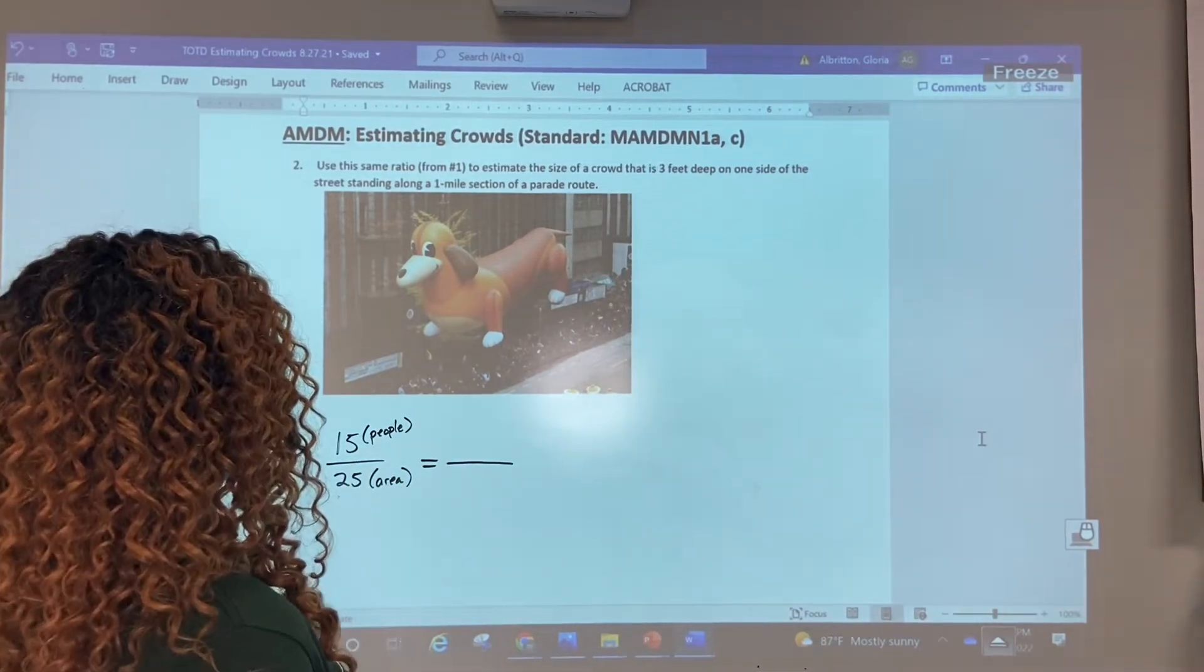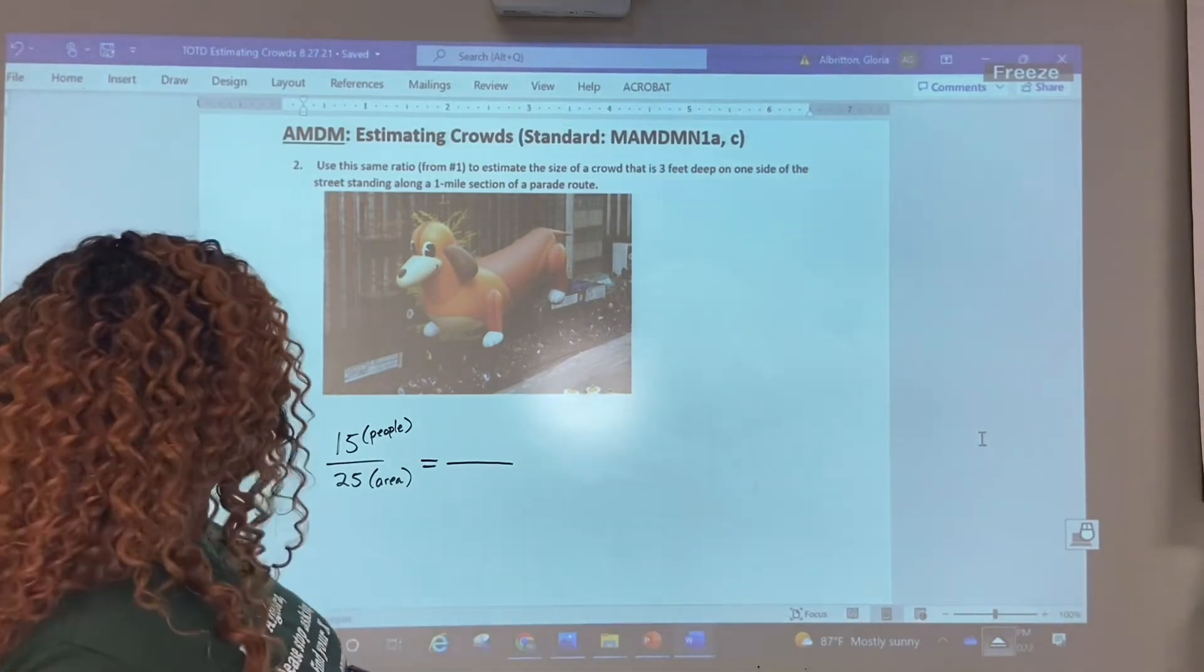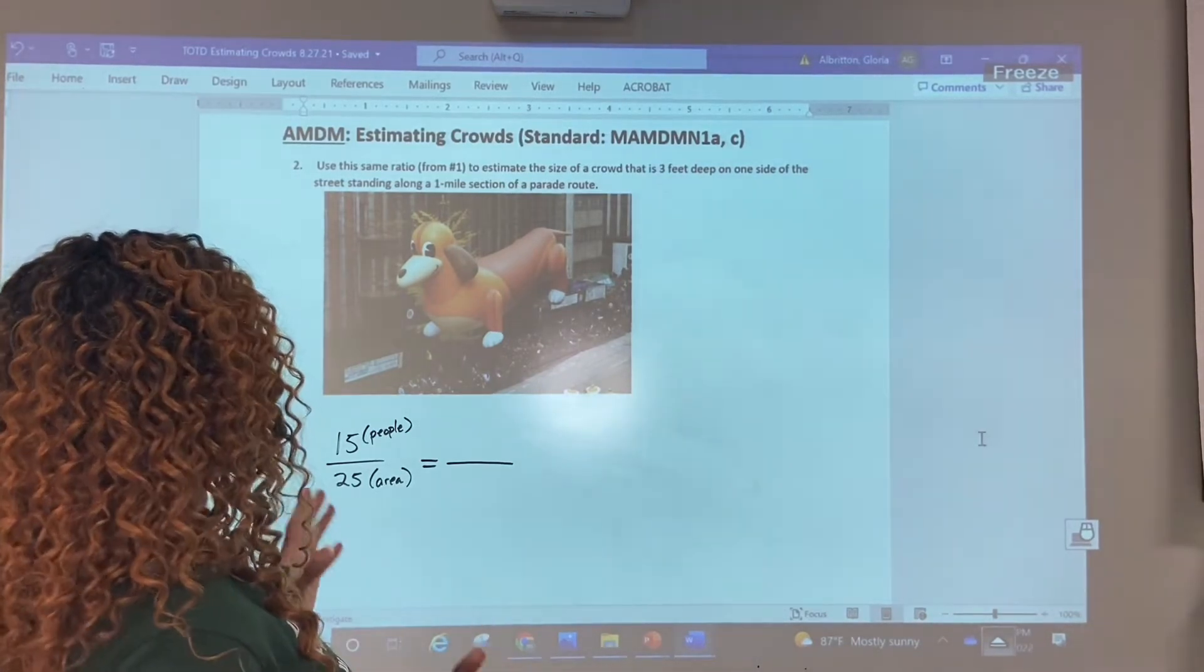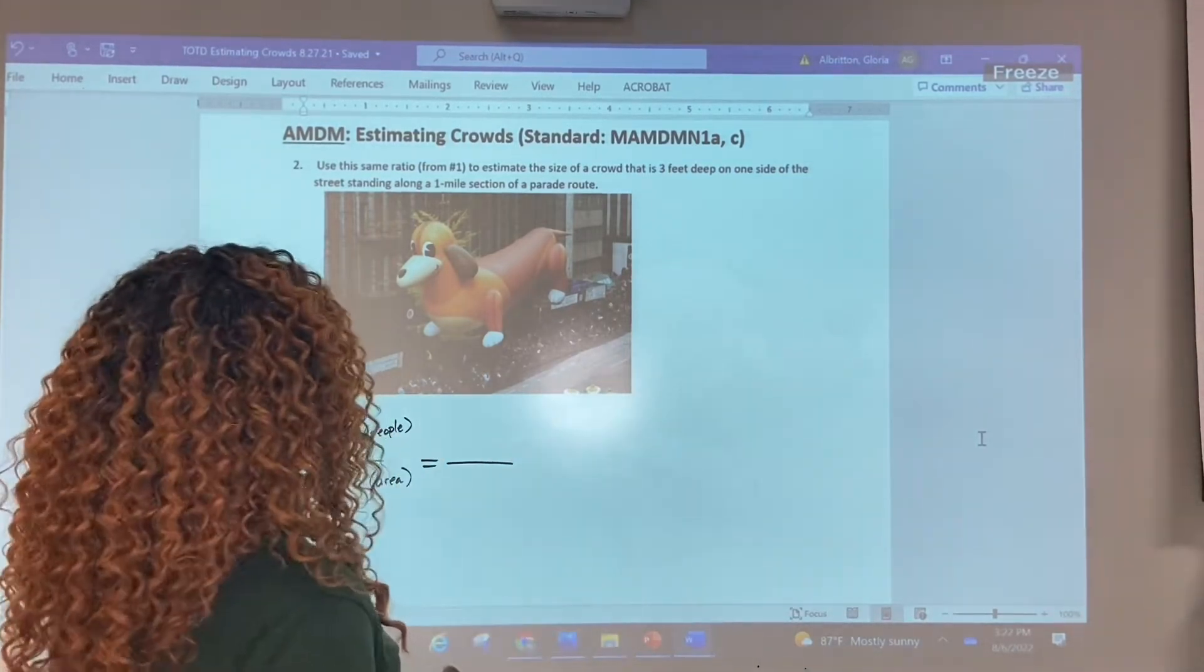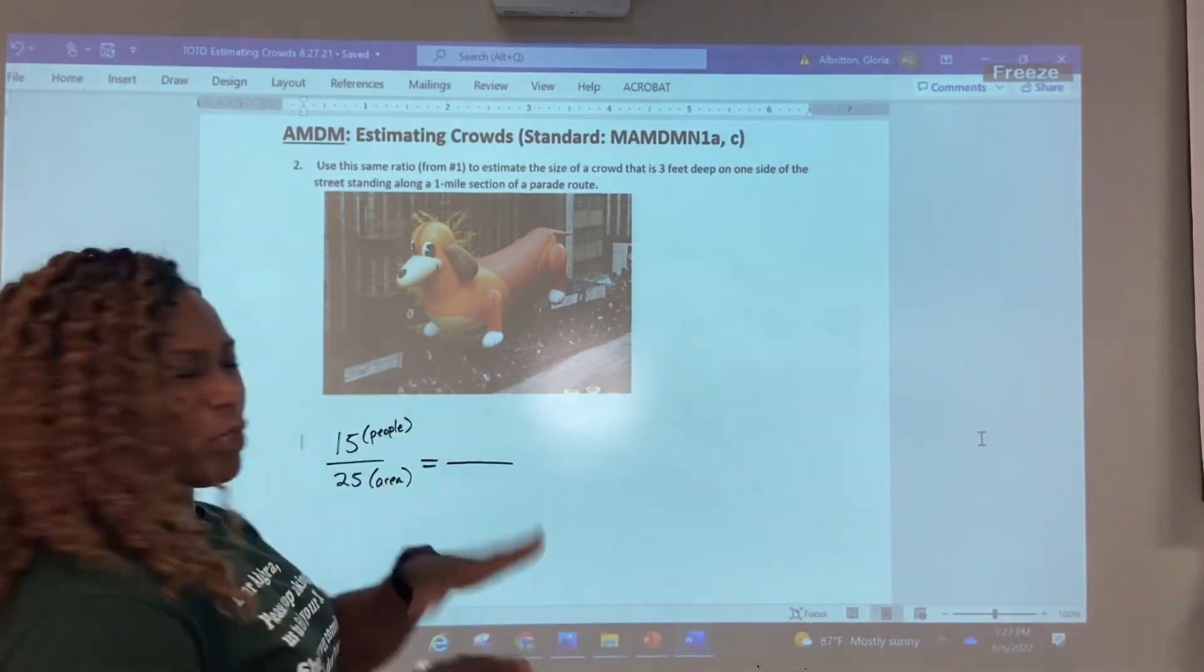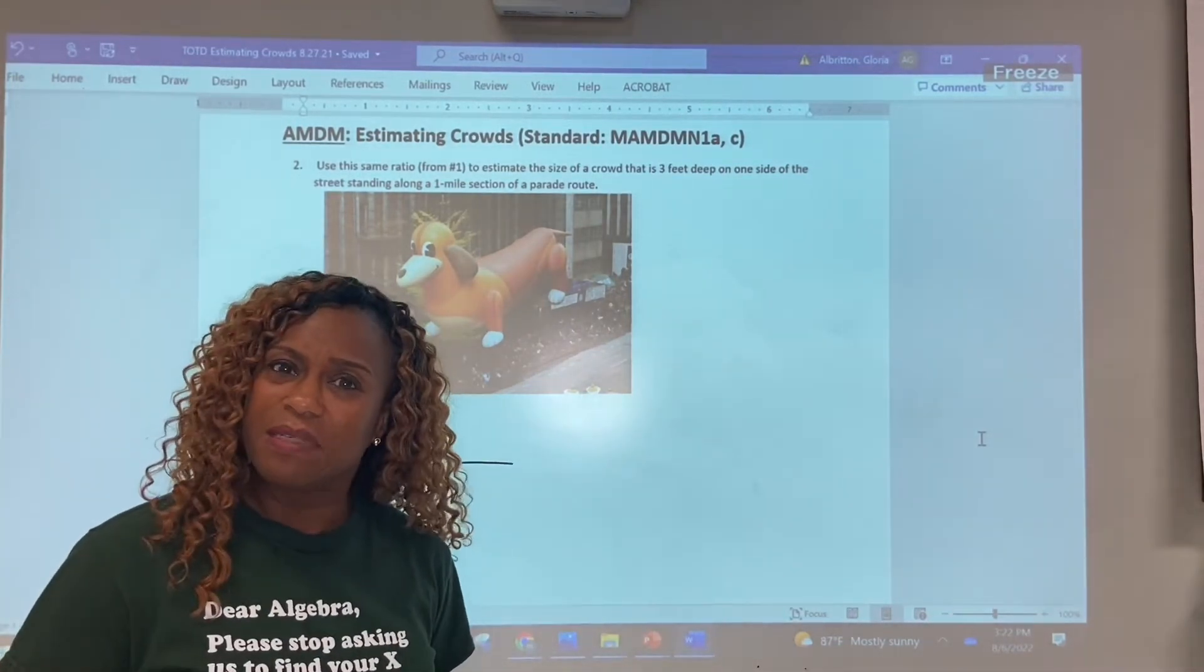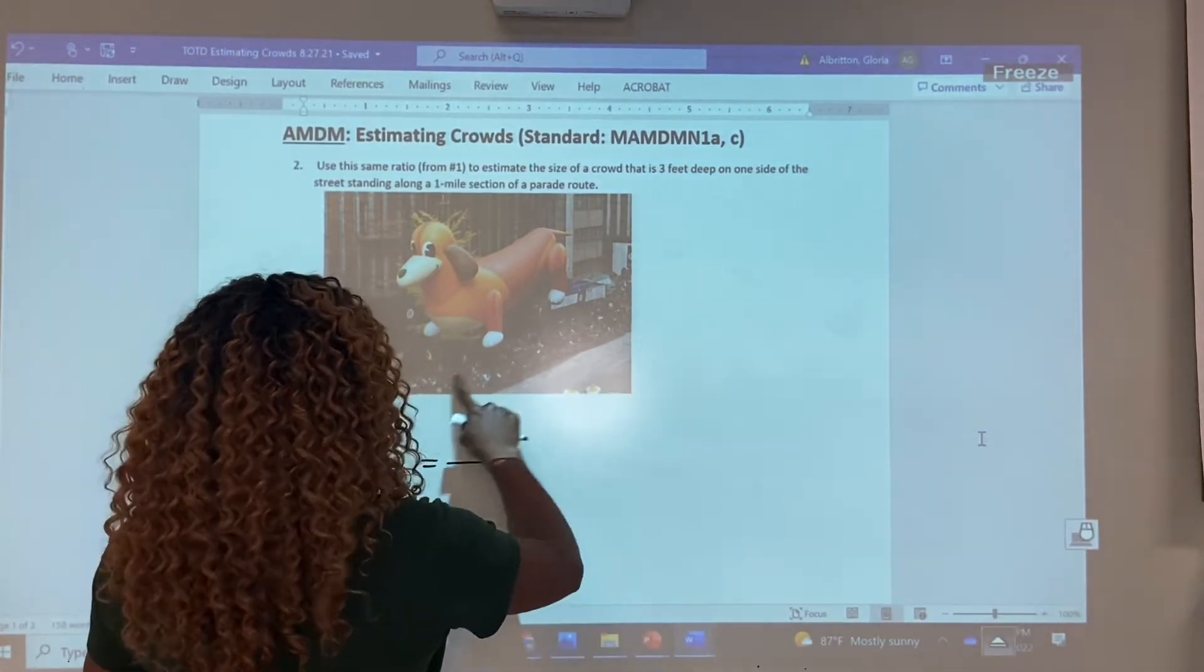We're asked to estimate the size of a crowd that's three feet deep on one side of a parade route that's one mile long. Now let's explain what that means. I've got a visual here. So this visual is going to help us understand what in the world they're talking about when they say three feet deep and one mile long. Notice the crowd, that's what we're looking at. These are the people at the parade. Parades are usually pretty crowded.